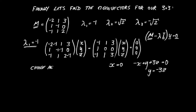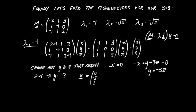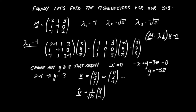We simply choose any values of y and z that satisfy these rules — x has been dictated to us. If I choose z equals 1, that gives y equals minus 3. We can then write down a satisfactory eigenvector: 0, minus 3, 1. It doesn't matter where the minus sign is — choosing z equals minus 1 gives 0, 3, minus 1. If we normalize, we need 1 over root 10 (since 3 squared plus 1 squared equals 10). This is the eigenvector that goes with eigenvalue minus 1.